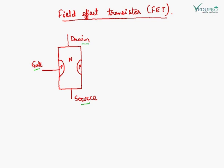There is a PN junction here. This is the junction, and this region is known as the channel. If the channel is N-type, it is known as N-channel JFET. If the channel is P-type, it is called P-channel JFET.